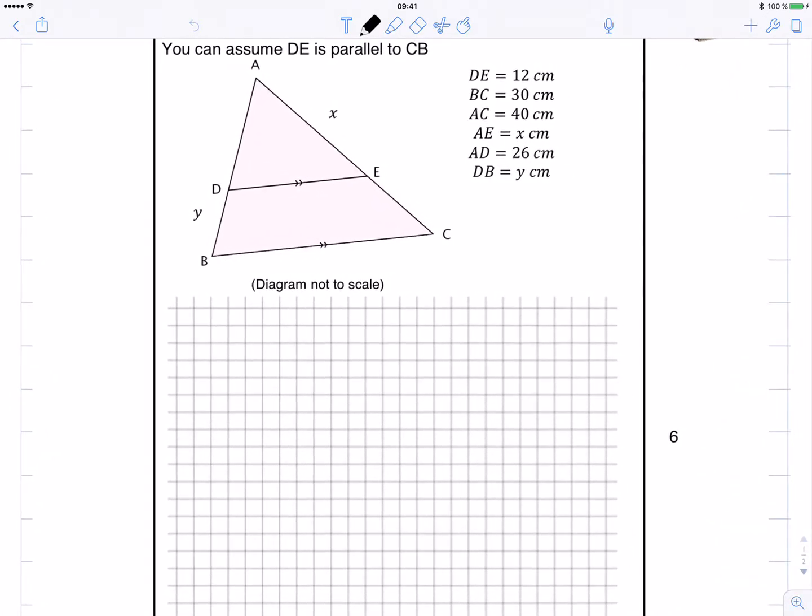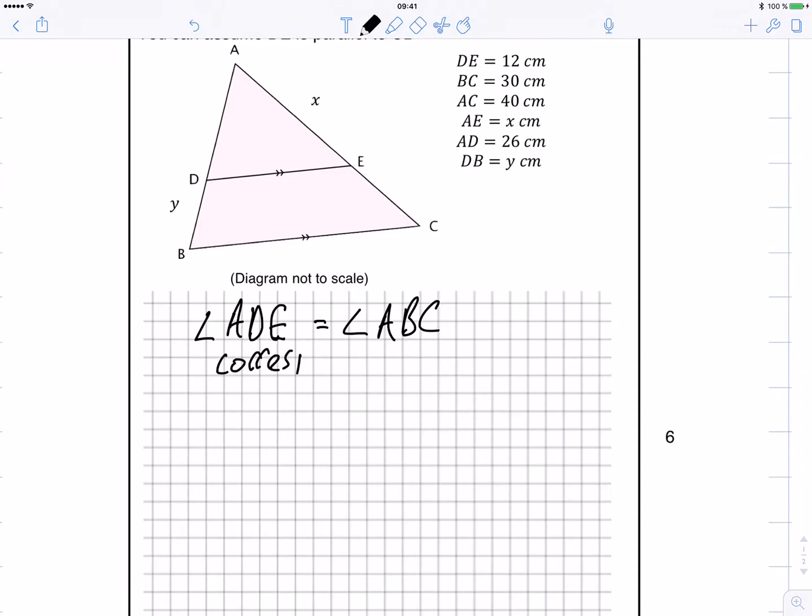Now first of all I want to state that angle ADE is equal to angle ABC because they're corresponding as DE is parallel to BC.